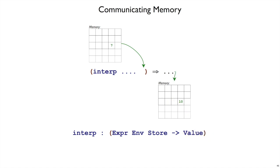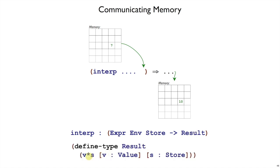Arrows only have one thing to the right of them. So in order to put this value together with memory, we will need a new result data type, which just has one variant, v star s, which pairs a value together with a store. So it's a long way of saying we get two results out, or two things come back from the interp function as a result.